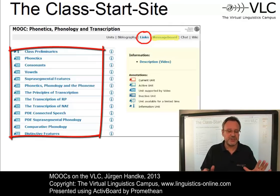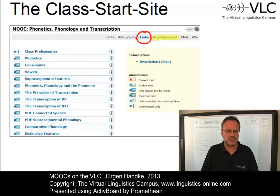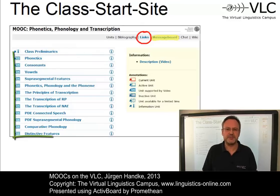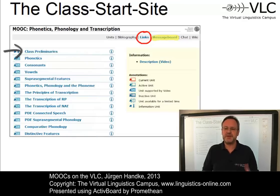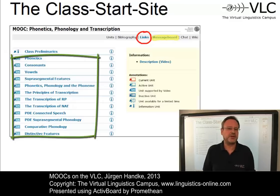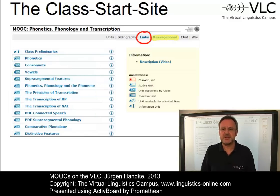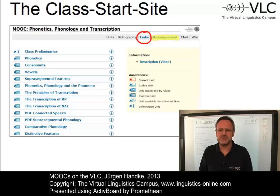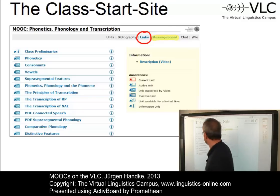Each class consists of a predefined number of units. In the case of this class, we have one introductory unit and twelve e-learning units. The introductory unit is mainly a textual repetition of what I am explaining in this video. The e-learning units contain the content of the class. After class activation, the current unit — that is, the unit currently in focus — is marked red.